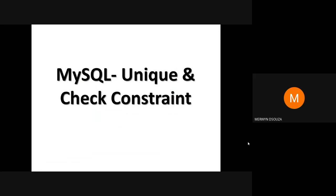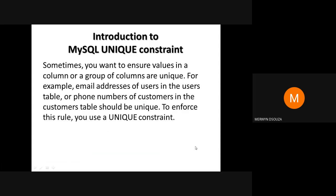In this video you will study MySQL unique constraint and how to use it to enforce the uniqueness of values in a column or a group of columns in a table. Sometimes you want to ensure values in a column or a group of columns are unique — for example, email addresses of users in the user table or phone numbers of customers in the customer table. To enforce this rule you can use the unique constraint.